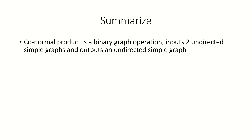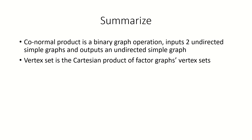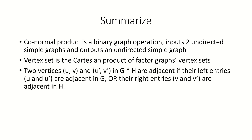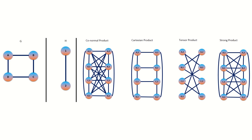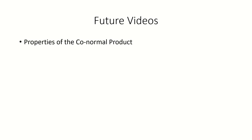To summarize: the conormal product is a binary graph operation that takes undirected simple graphs as input and outputs an undirected simple graph with vertex set equal to the Cartesian product of the factor graphs' vertex sets. Two vertices in the conormal product are adjacent if either their left or their right entries are adjacent in their respective factor graphs. One observation is that the conormal product generally results in a graph with many more edges than more conventional graph products, by nature of the inclusivity of the OR operation. That's it for this video — in future videos, we'll look at some fascinating properties of the conormal product operation, so stay tuned! Thanks for watching.